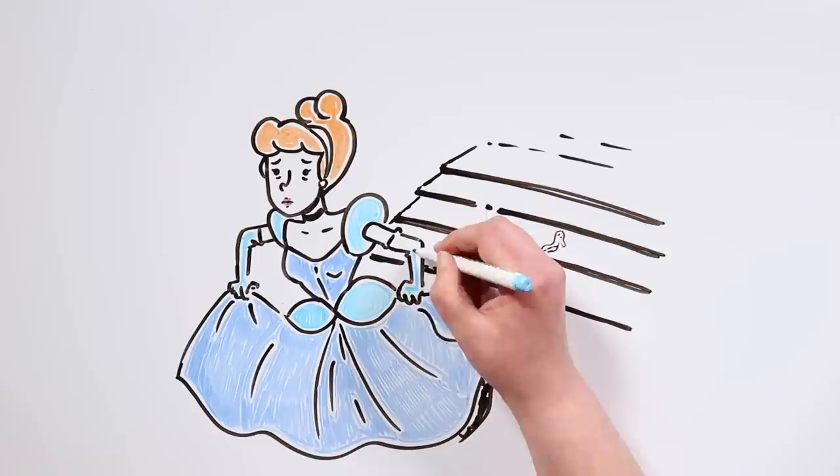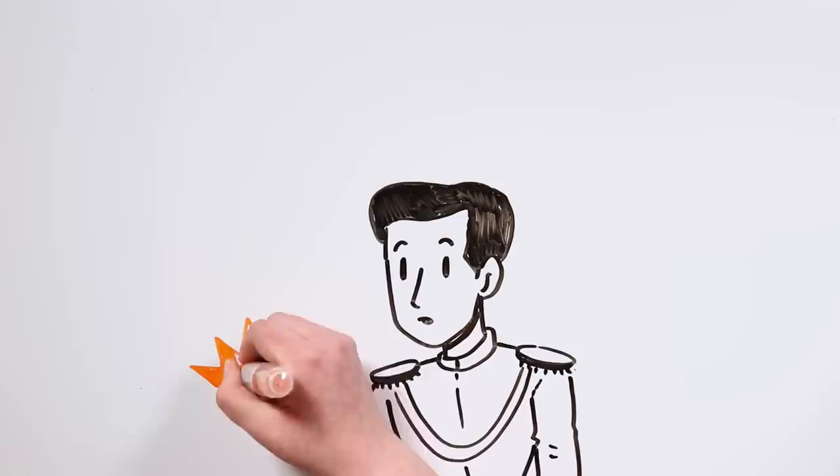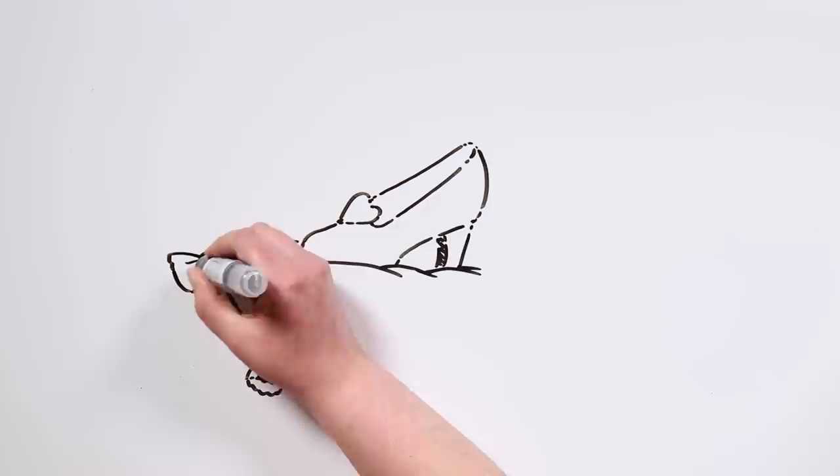The prince found this slipper later, and knowing that was the only clue he had about that woman's identity, he devised a plan. He sent out one of his servants to scour the kingdom, announcing that the prince would marry the woman whose foot could fit in the slipper.